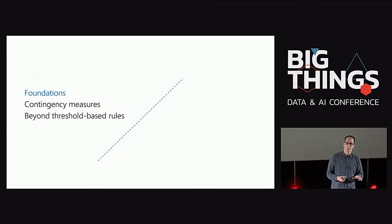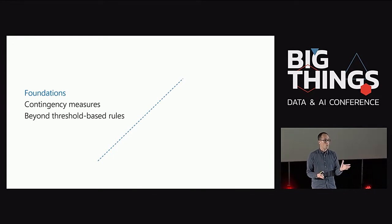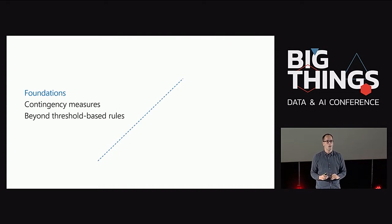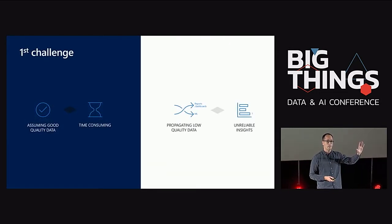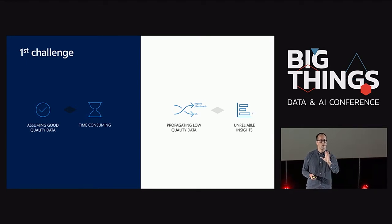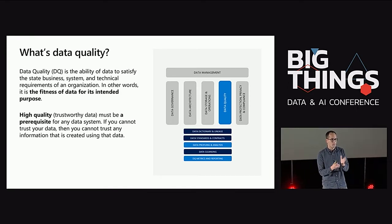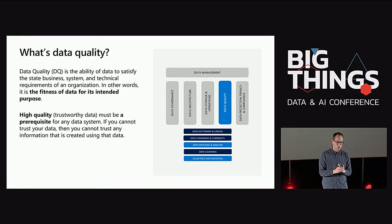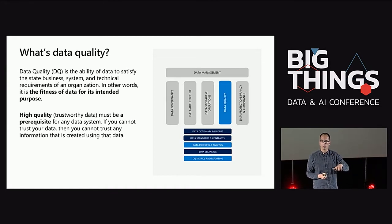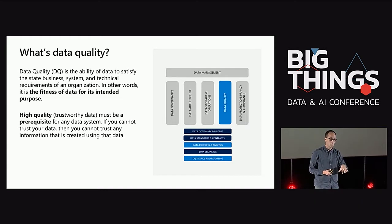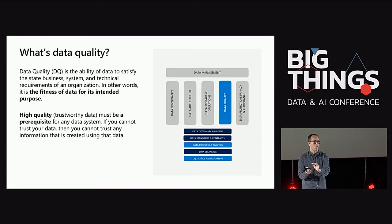We are going to talk here about some of the foundations of data quality — how we can face and deal with these issues — and go beyond to automated data quality and apply some ML on top of this. The first challenge is: we are assuming good quality data, and that is why we spend a lot of time performing queries. What is data quality? I like to say it is the fitness of data for its intended purpose. Data quality includes many aspects: data profiling, data management, data governance, data architecture, et cetera. This talk will focus primarily on profiling and data quality.